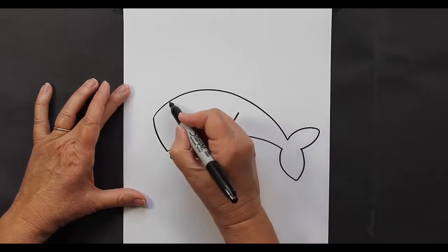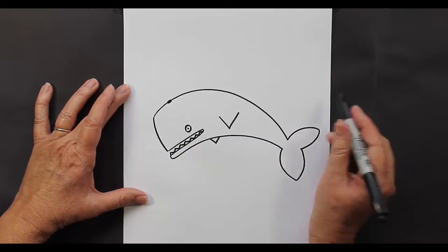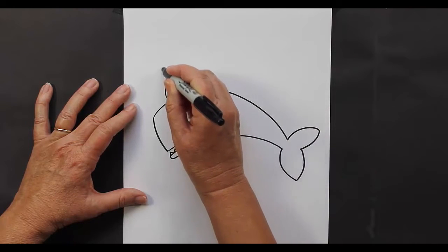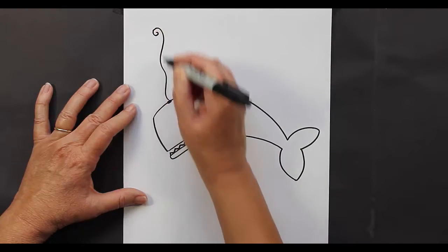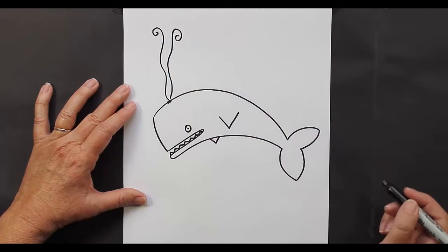Now let's come back up to the top about right here. We're going to make a blowhole. So he's going to be blowing some water out so we are going to make some squiggly lines maybe with curls at the top. Just like that.